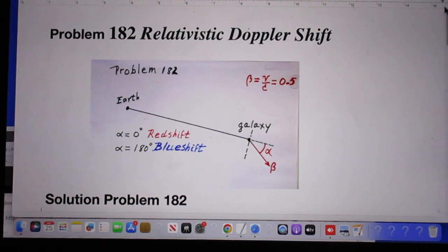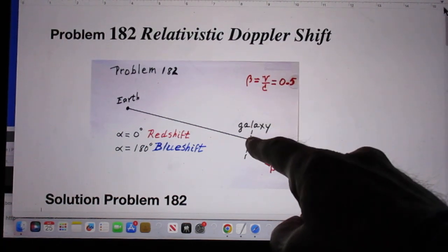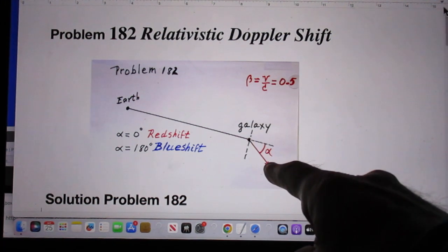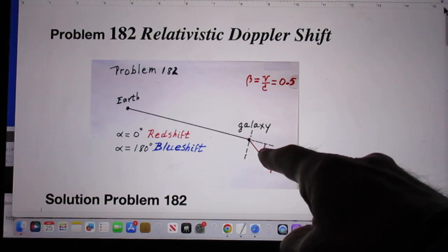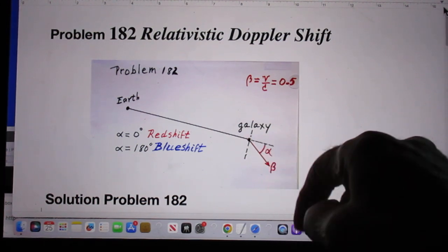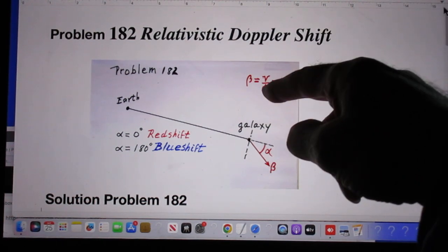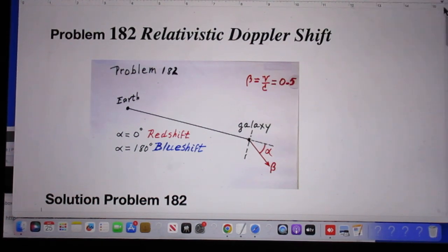Let the frequency be F. The galaxy is moving in this direction. This angle is alpha. And the speed of that galaxy is given by V over C, which is half the speed of light.